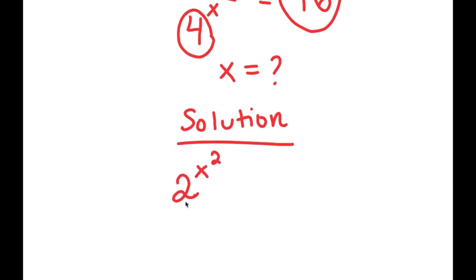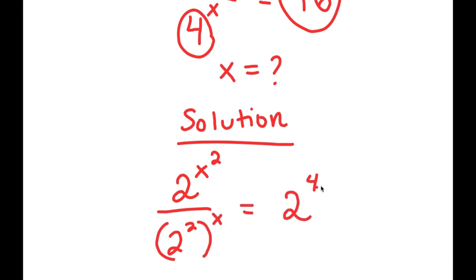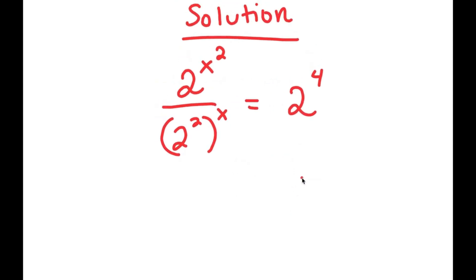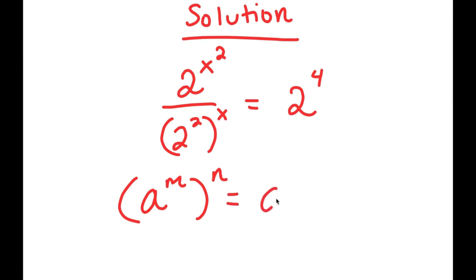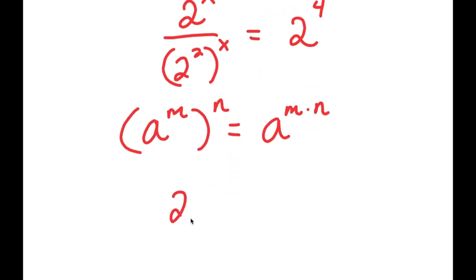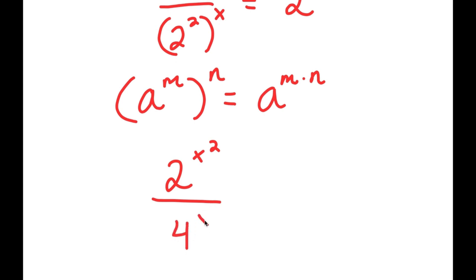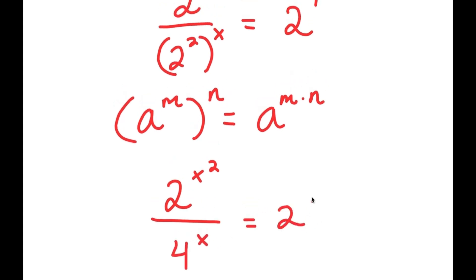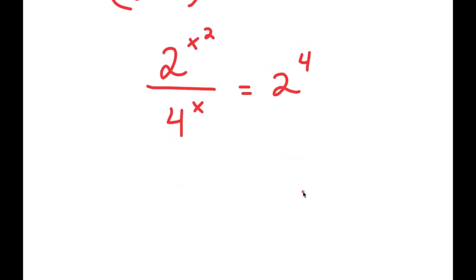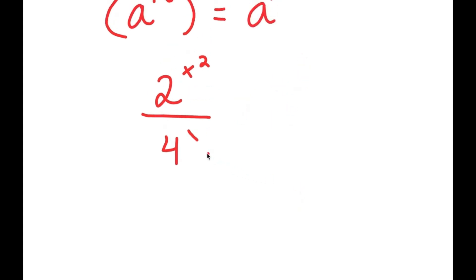So I get 2 to the power of x squared over 2 squared to the power of x, is equal to 2 to the power of 4. Now, if I have something in the form a to the power of m to the power of n, this is equal to a to the power of m times n. So 2 squared to the power of x — that is actually 2 to the power of 2x, which is equal to 2 to the power of 4.